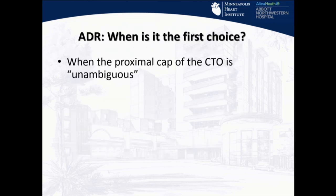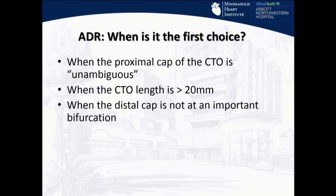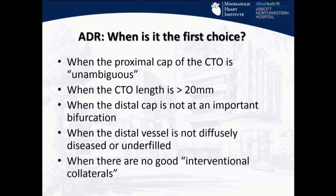When is it the first choice? When the proximal cap is unambiguous — when you know where to go. When the CTO is long; if it's short, you can generally go with a wire escalation strategy, but if it's long, chances are very good you'll end up in the sub-intimal space anyway. When the distal cap is not at an important bifurcation, meaning there's a good landing zone, and when the distal vessel is not diffusely diseased. And particularly when there are no good interventional collaterals.